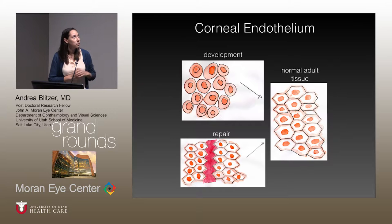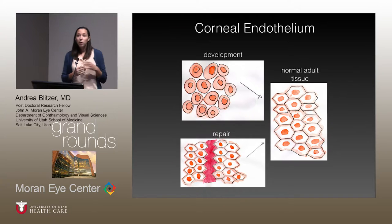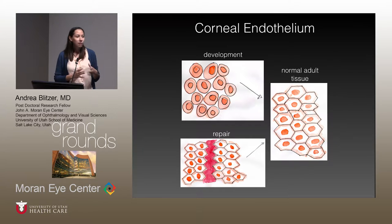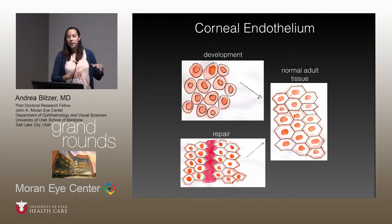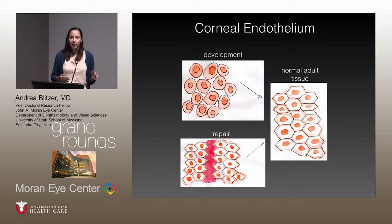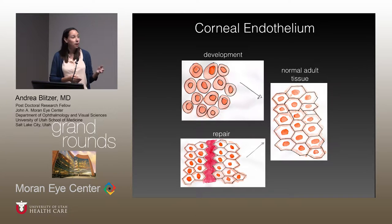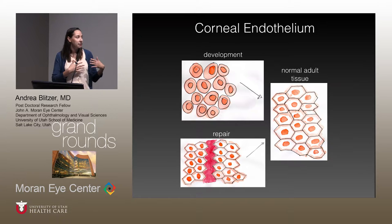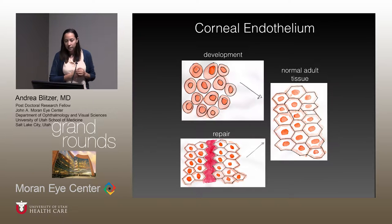There are two time points during endothelium development that I'm going to talk about. The first is development: when we're born, our corneal endothelial cells are all different shapes, not very uniform, and as we progress to an adult tissue, they become a really nice hexagonal honeycomb structure. The second is repair. These cells do not divide, so if they're lost through Fuchs' dystrophy or phacoemulsification, the only way the tissue can repair is by existing cells migrating to fill the gaps.